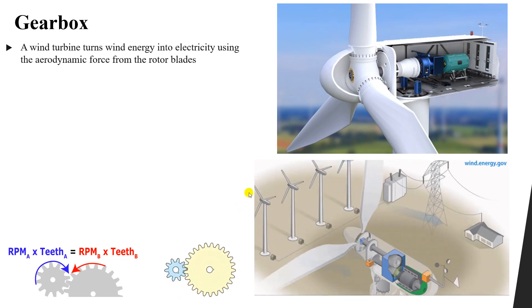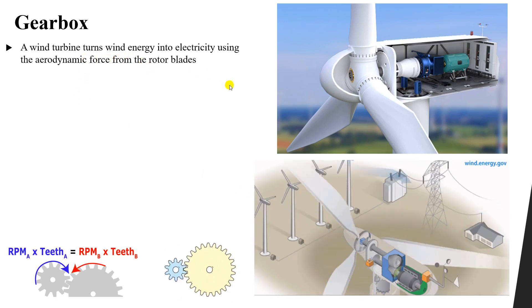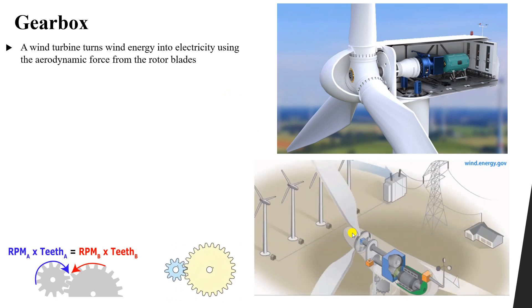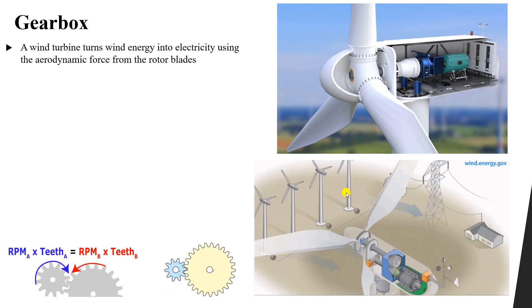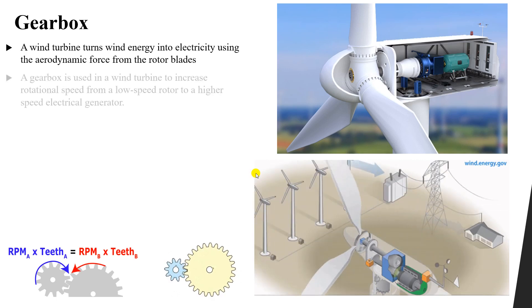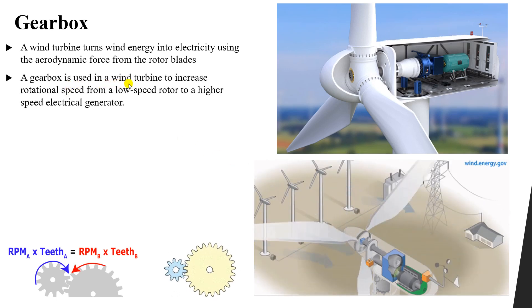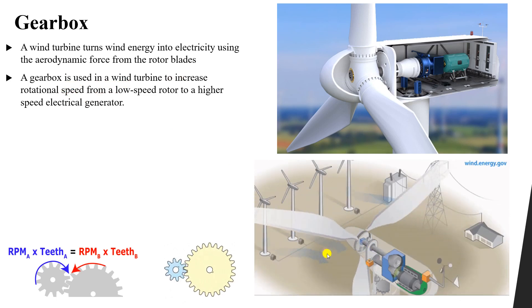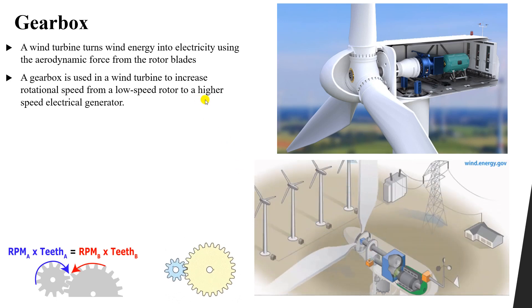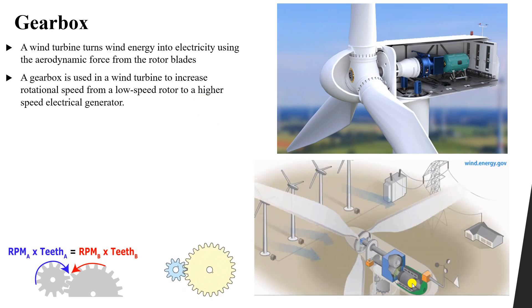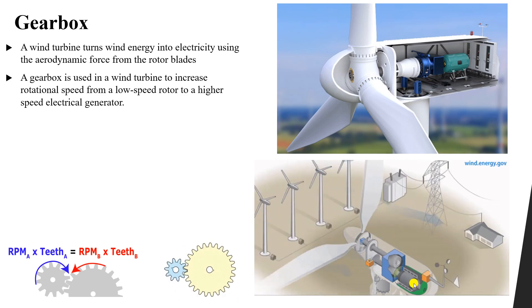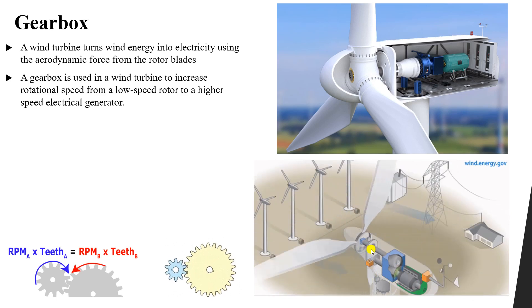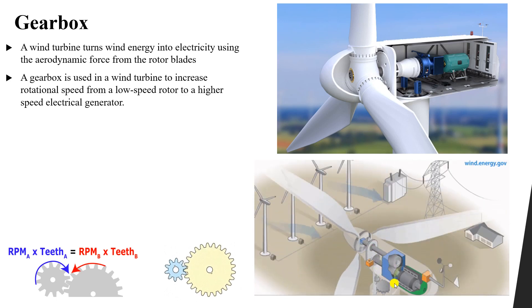Simply, the wind turbine turns wind energy into electrical energy by using the aerodynamic forces from the rotor blades, converting the kinetic energy of wind into mechanical energy. The wind turbine blades have a shaft connected to a gearbox. The gearbox is used to increase the rotational speed from a low-speed rotor — the blades rotating very slowly — into a higher speed for the electrical generator. For example, the generator needs 1500 RPM compared to a wind turbine which gives us around 15 RPM.